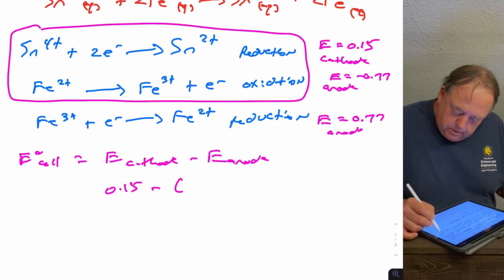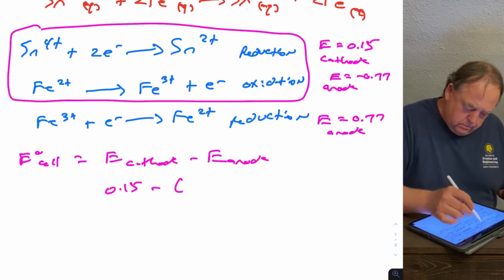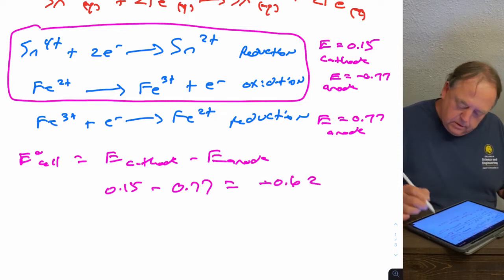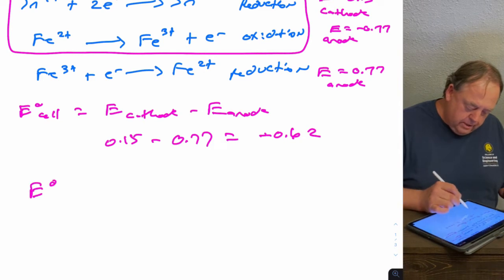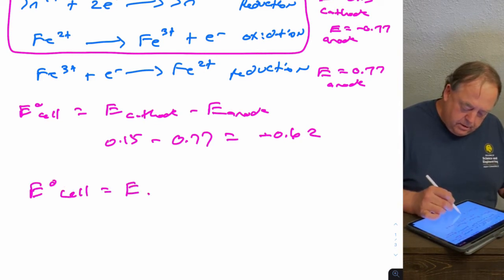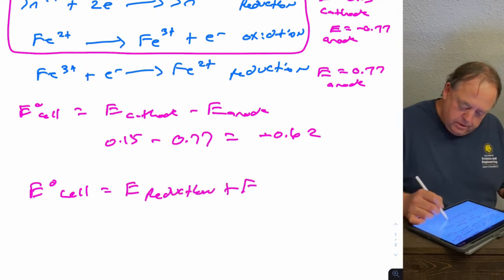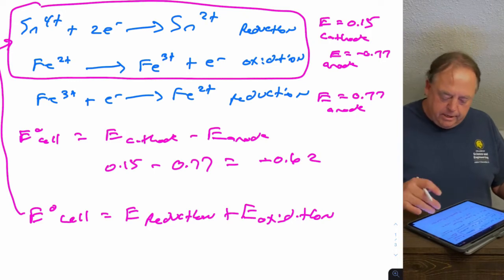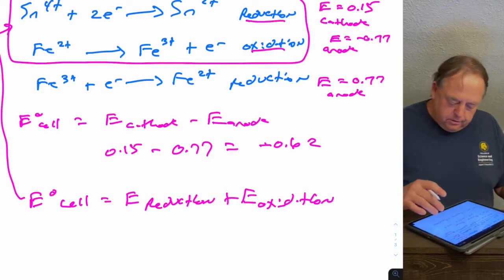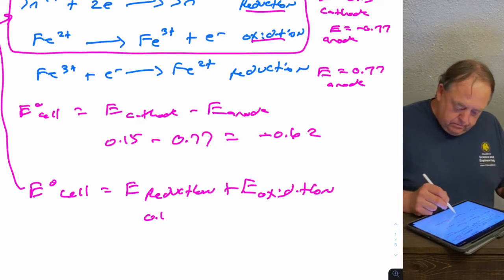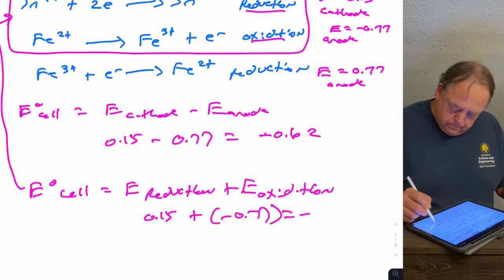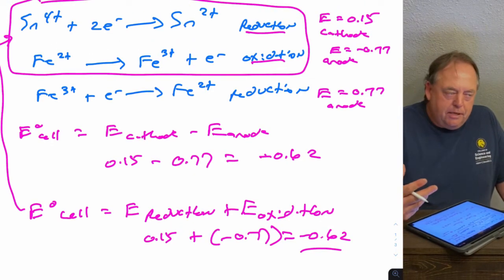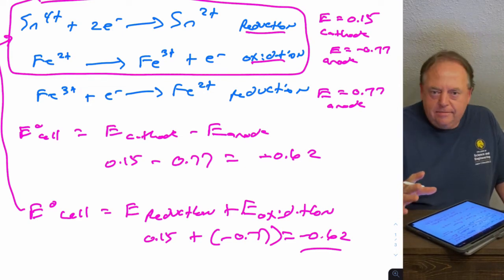So this would be the E anode reaction, giving negative 0.62. Or the other formula: E0 cell equals E reduction plus E oxidation. That's where you use the two equations as originally written as half-reactions, because one's a reduction and one's an oxidation. But you get the same answer. This part of the chapter can be confusing — the math is simple, but you have to make sure you're adding or subtracting the right numbers.